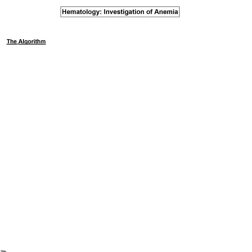Today's topic is the investigation of anemia. We should start with the discussion of the definition of anemia, because while it seems there should be a very tight cutoff for anemia versus non-anemia, in fact hemoglobin varies a lot with various circumstances. For example, it varies with your state of hydration — we calculate concentration of hemoglobin, so plasma volume affects it. Gender affects it.